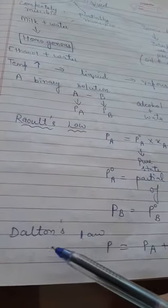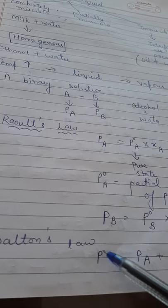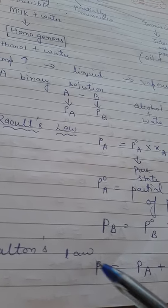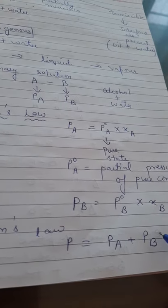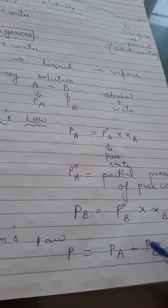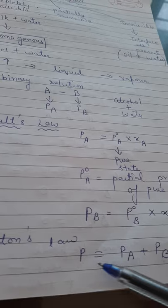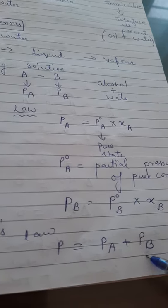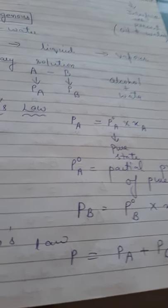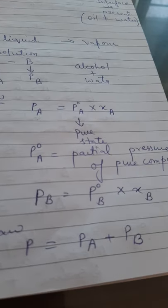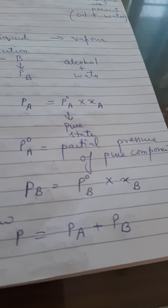What was Dalton's law? The total pressure exerted by the system is equal to the pressure exerted by the components that are present in the solution. So P is equal to PA plus PB, according to Dalton's law that we have already studied in grade 11.